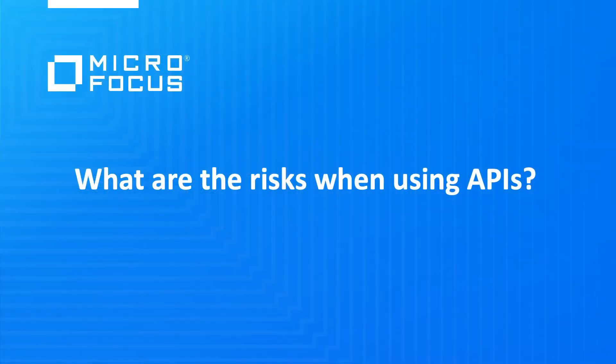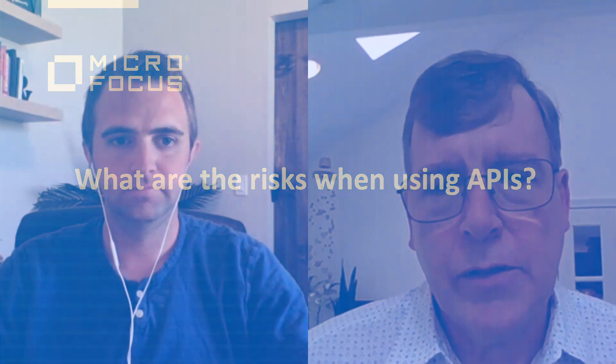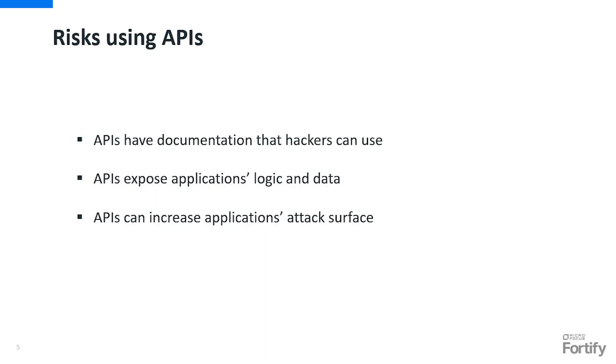As APIs become more prevalent, let's dive into some of the risks they pose today. APIs define a backdoor to adjacent systems and apps for those intent on gaining access, both legitimately and otherwise. Detailed documentation is usually available for APIs to provide transparency to developers — they need to know how the APIs work — but that documentation also provides a blueprint for hackers to utilize APIs in their attacks. APIs expose application logic and data, providing access to multiple sources of potentially sensitive data and mission-critical services as a risk to you and your organization.